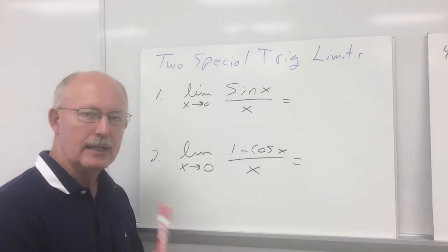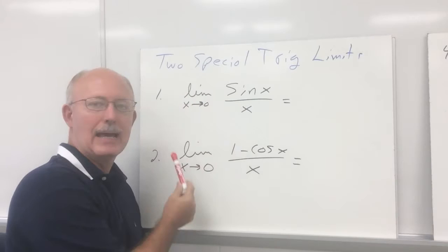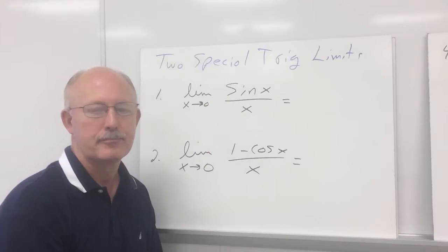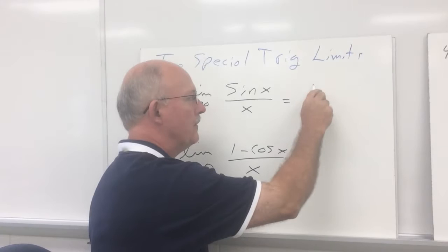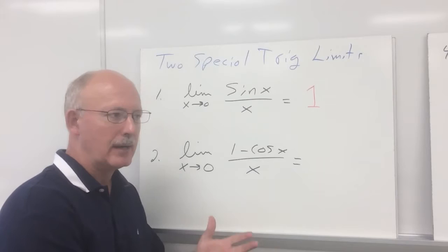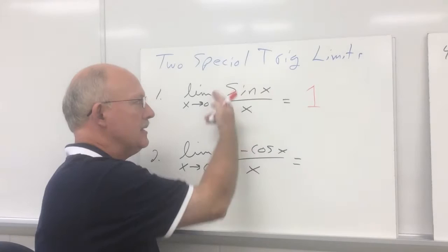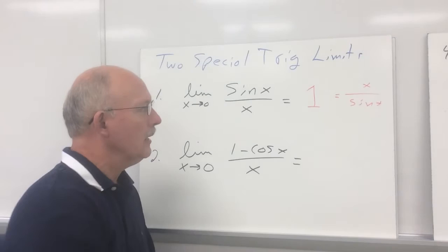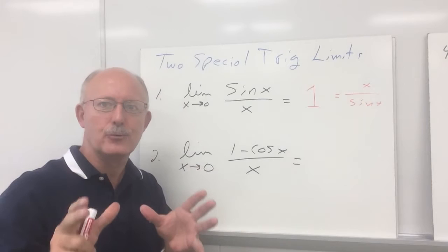Here's the first one. Anytime you're working a trig problem and you come across sin x over x, and you're finding the limit as x approaches 0, this will always evaluate to 1. Also, x over sin x will also be equal to 1. So either form evaluates to 1, which makes it a lot easier if you can recognize that special trig limit in your trig problem.